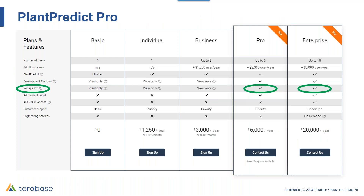Looking at the PlantPredict pricing table, Voltage Pro is only available within PlantPredict Pro and Enterprise pricing tiers. The Pro package includes three user licenses, full access to all core PlantPredict features plus the dev platform, for an annual subscription price of $6,000. Additional users are $2,000 per user per year. Think about it — you can save $600,000 on a single project with a $6,000 subscription. The Enterprise package gets you all the same benefits as Pro but with ten users instead of three, plus access to the PlantPredict API and SDK — a very powerful tool. You also get enrolled in the concierge support plan.